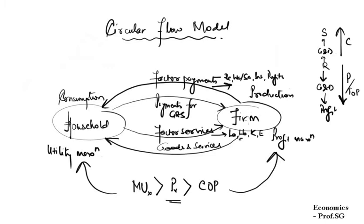In return, the firm produces goods and services and makes them available for consumption to different sections of the society — the households — thereby reversing the role. The firm plays the role of a producer and the household the role of consumer. But fundamentally, the primary role of a household is consumption and that of a firm is production. We also saw how the roles and goals of these two entities might be very contrasting in given situations.